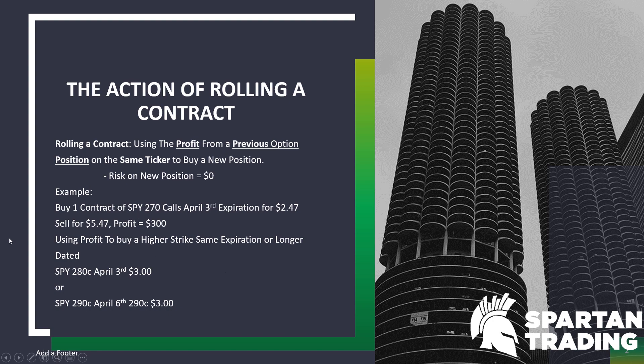So in this case, we'll talk about using that $300 from the first position — SPY 270 calls — that $300 profit to buy a $280 call at the same strike for $3. So a higher strike, and I'm only spending the profit on that new position, so my risk should be zero. Or if I want to do a longer dated, I could buy the April 6th calls. Obviously you're going to have to go a little bit further out of the money because there's going to be a little bit of premium built into that longer dated contract, so it's going to be a little bit more expensive — the $290 calls at $3.